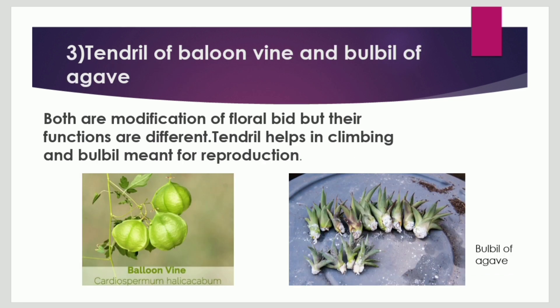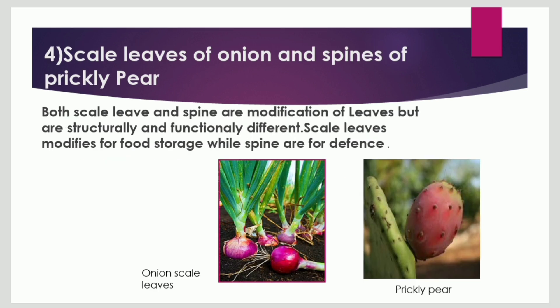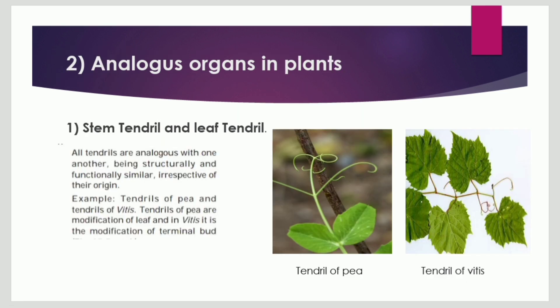Tendril of balloon vine and bulbil of agave are modifications of the floral bud but their functions are different — the tendril helps in climbing while the bulbil is meant for reproduction. Scaled leaves of onion and spines of prickly pear are both modifications of leaves but are structurally and functionally different: leaves are modified for food storage while spines are for defense.